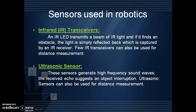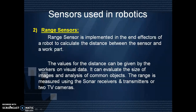Ultrasonic sensors generate high frequency sound waves. The received echo suggests an object interruption, and ultrasonic sensors can also be used for distance measurement. The second sensor is range sensors. A range sensor is implemented in the end effectors of a robot to calculate the distance between the sensor and the work part. The values for distance can be given by workers on visual data. It can evaluate the size of images and analysis of common objects. The range is measured using sonar receivers and transmitters or two TV cameras.